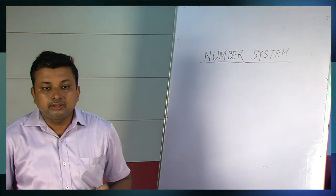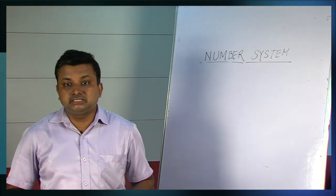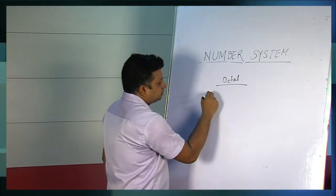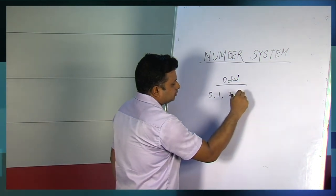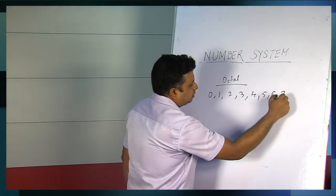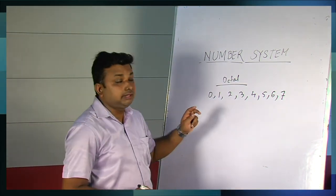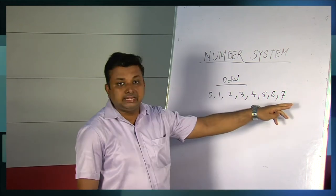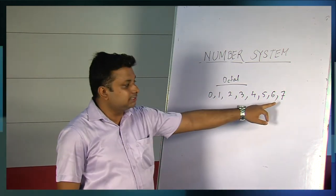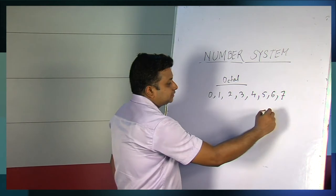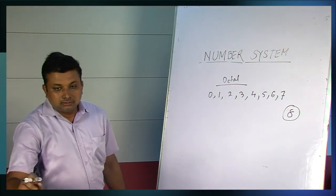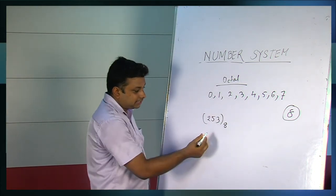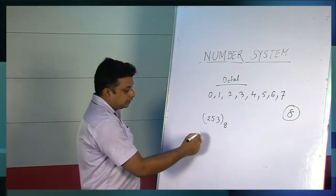So next we come to the octal number system. It is also a most commonly used positional number system. And in octal number system it uses only 8 digits. It seems similar to the decimal number system, but in decimal number system we had the number ranging from 0 to 9. But here only it considers 8 digits up to 7. So what is its base? Its base is 8. If we consider any number and I write here base as 8, this represents an octal number.